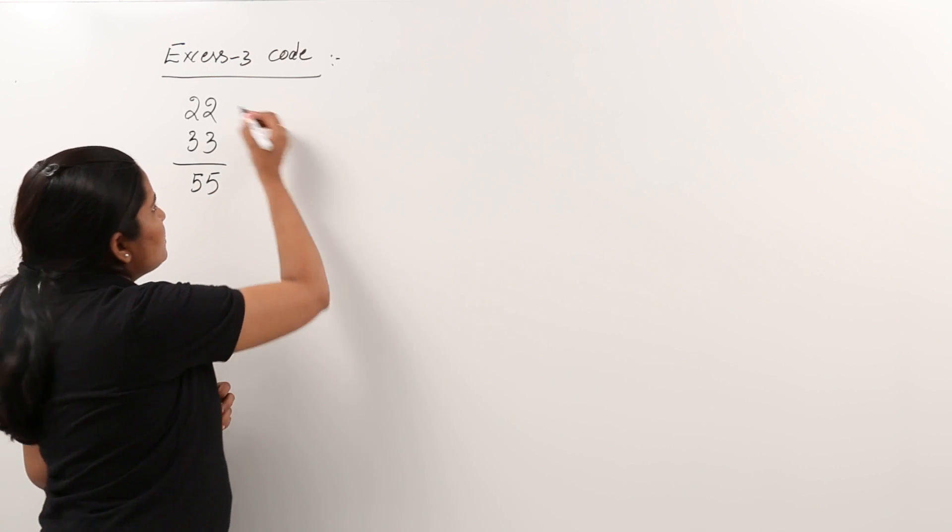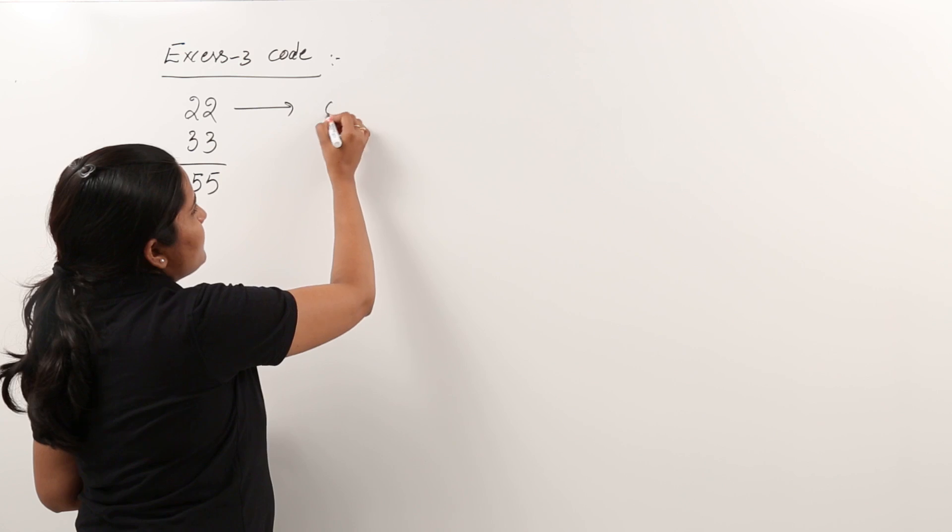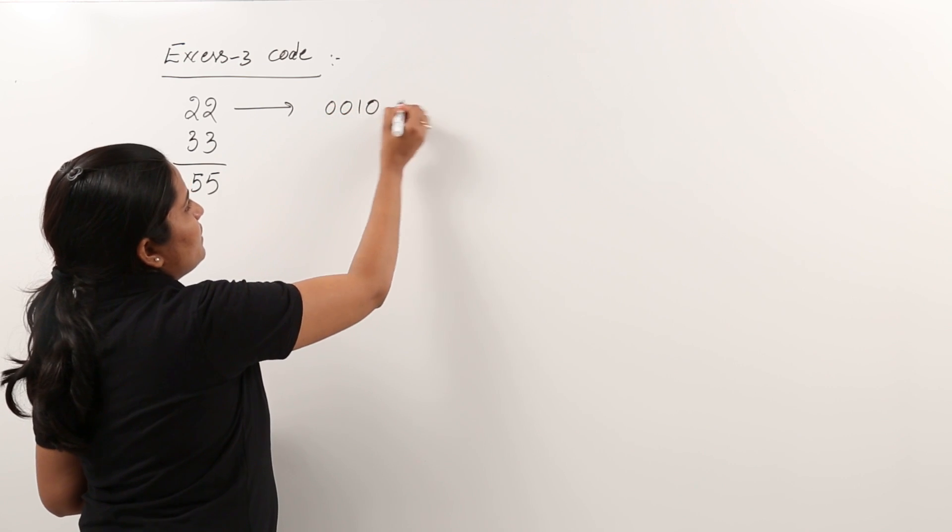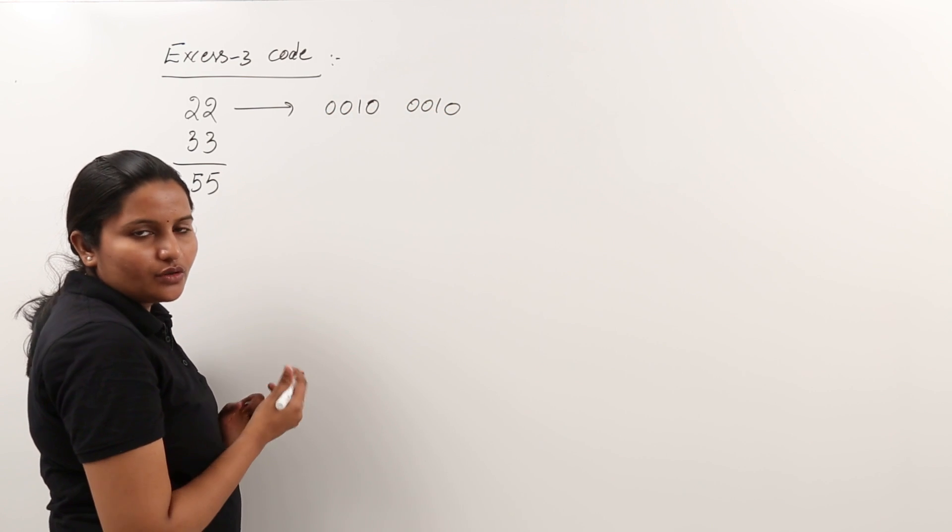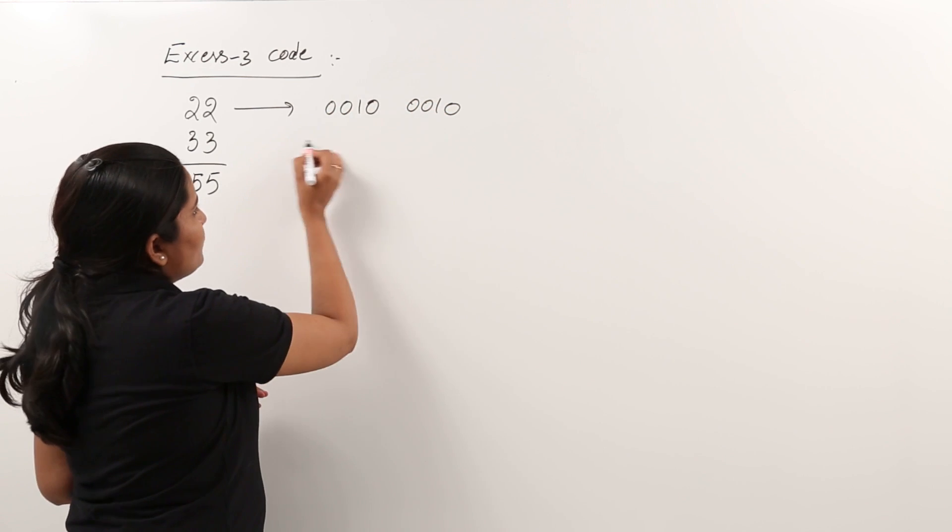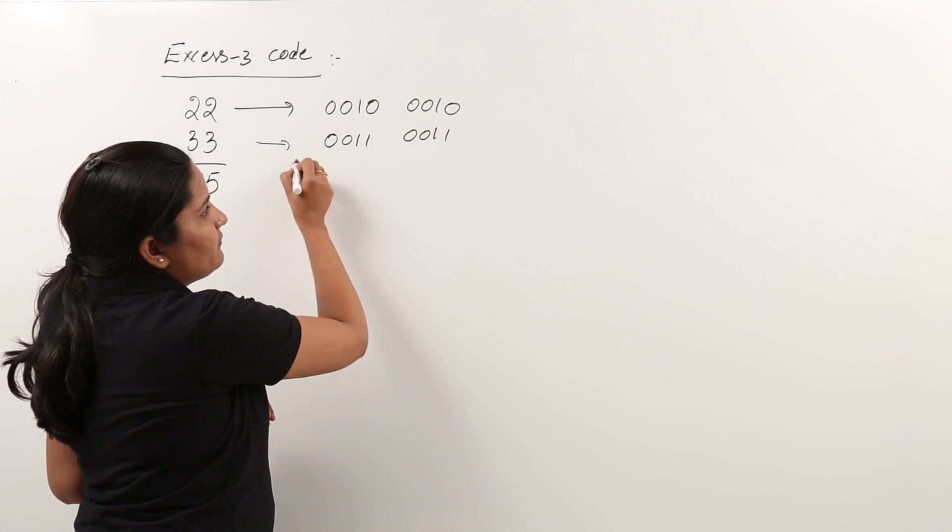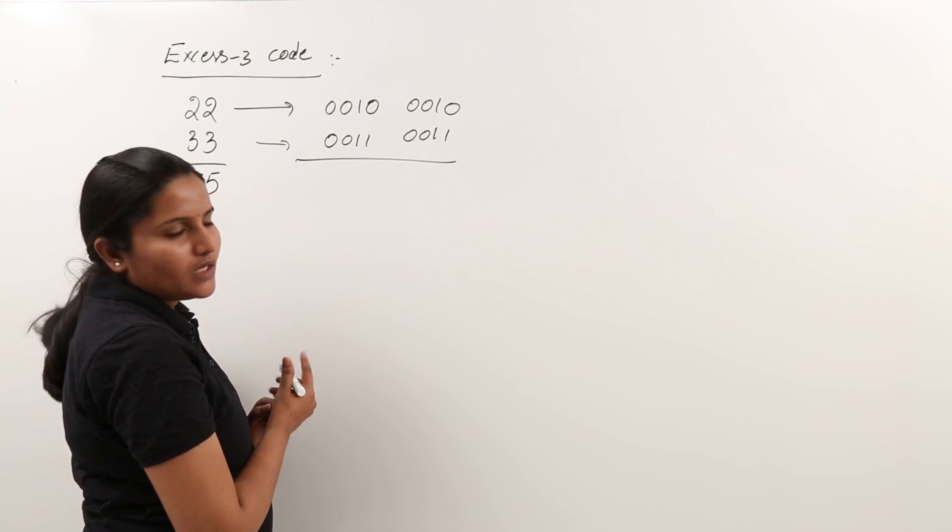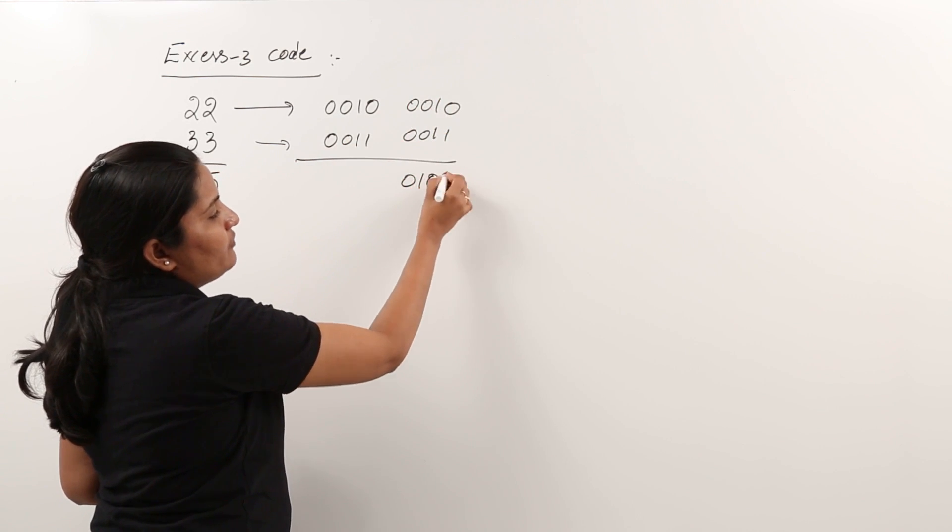So you know that the BCD code for 22 is 0010 and 0010. This is BCD code. To get XS3 code, you need to add 3 for every digit. You are adding 3 for every digit. So you are adding 2 plus 3 means you are going to get 5.